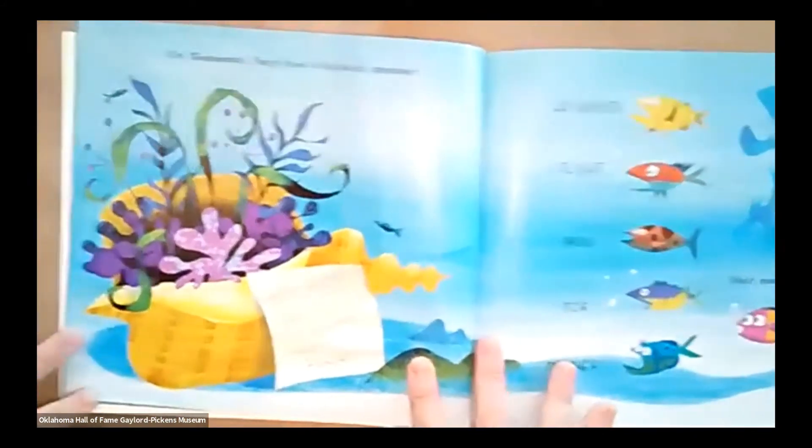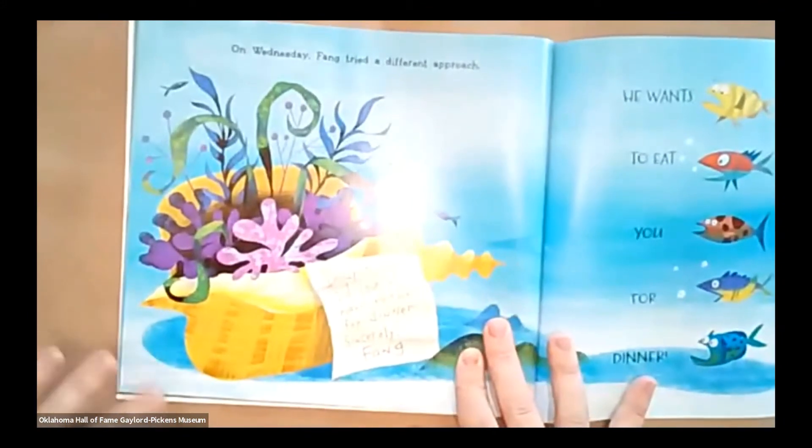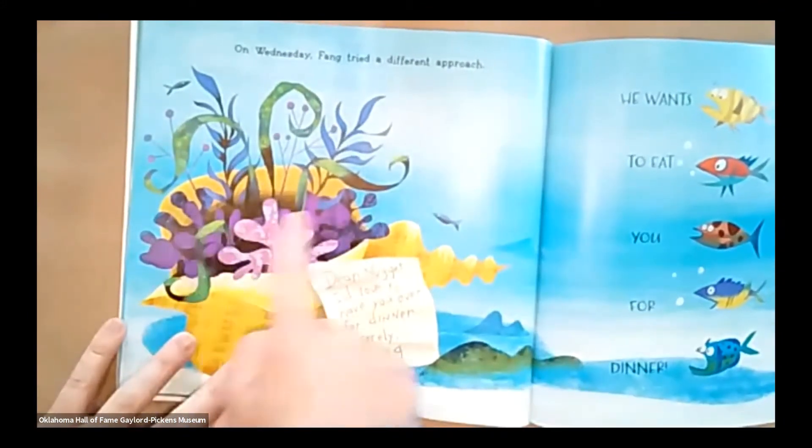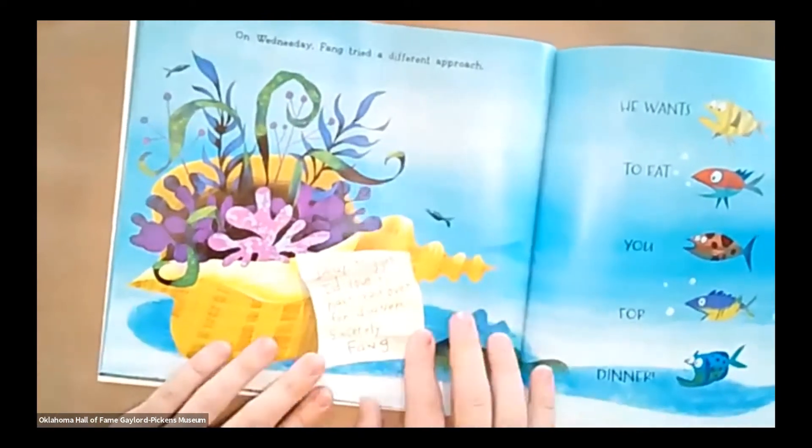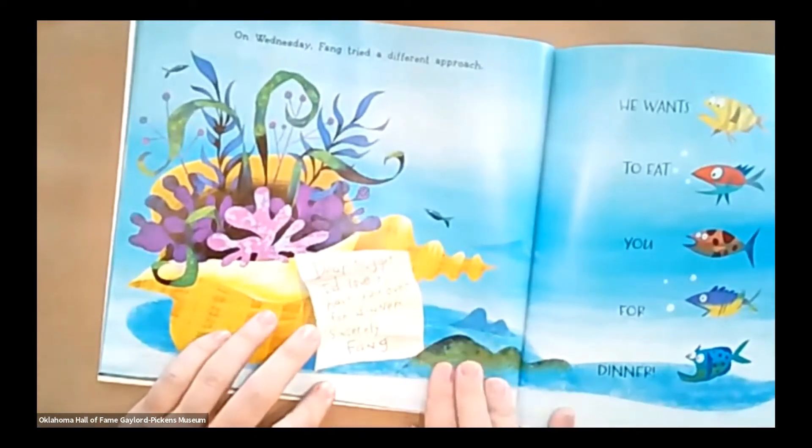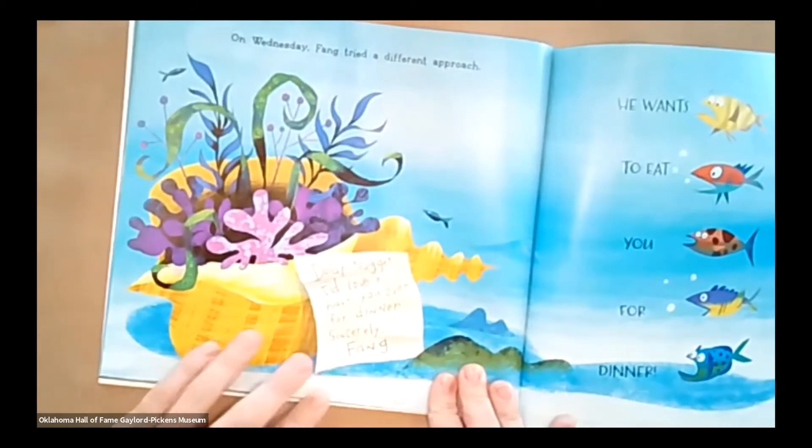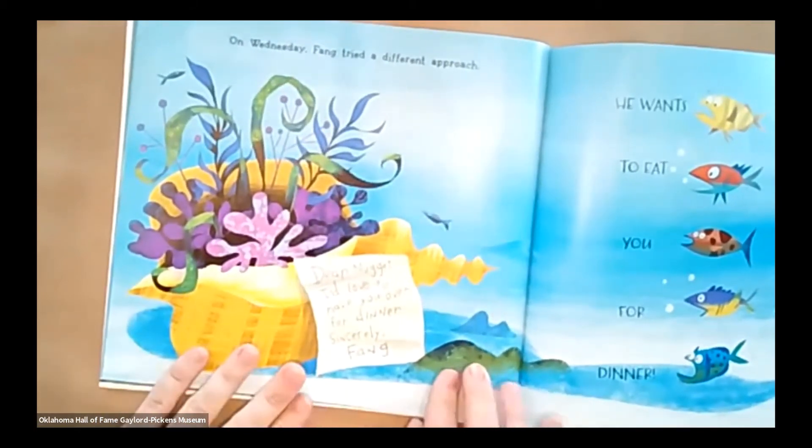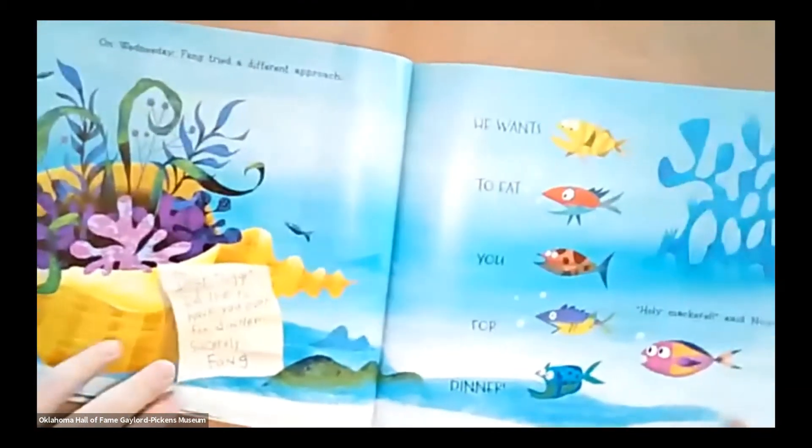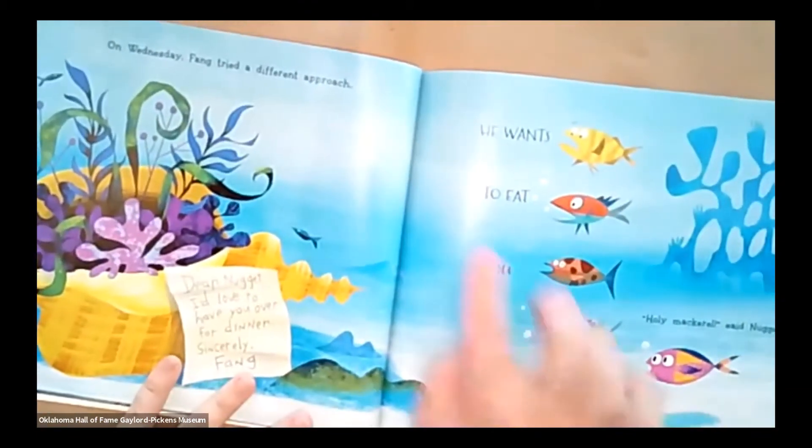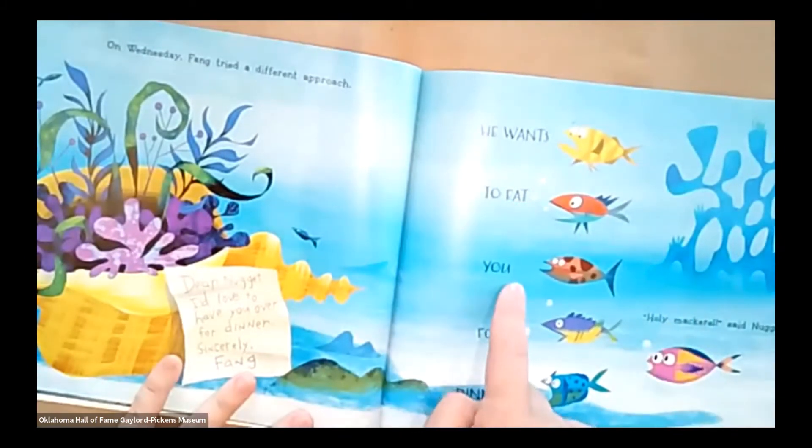So even the mermaid couldn't convince them otherwise. On Wednesday, Fang tried a different approach. See, he sent flowers. How nice. Dear Nugget, I'd love to have you over for dinner. Sincerely, Fang. Oh, he even wanted to invite him for dinner. Uh-oh. What do his friends have to say?